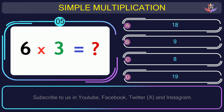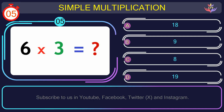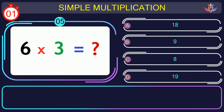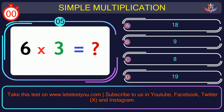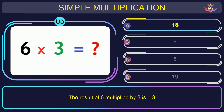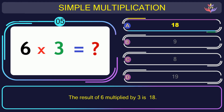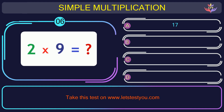Question number 5: what is the result when you multiply 6 by 3? The correct answer is option A: 18. The result of 6 multiplied by 3 is 18.